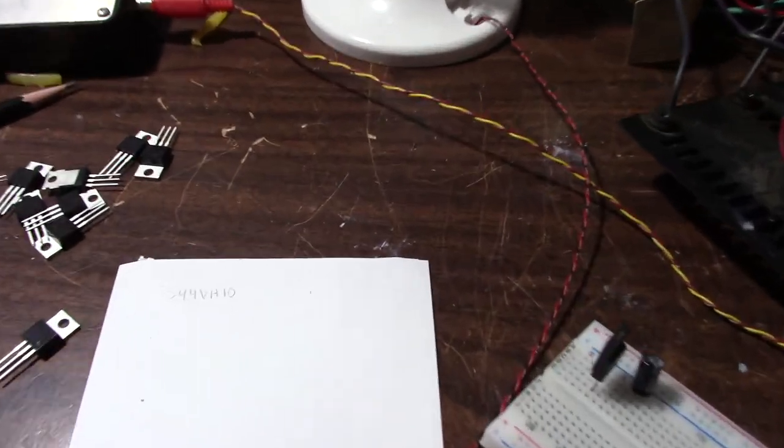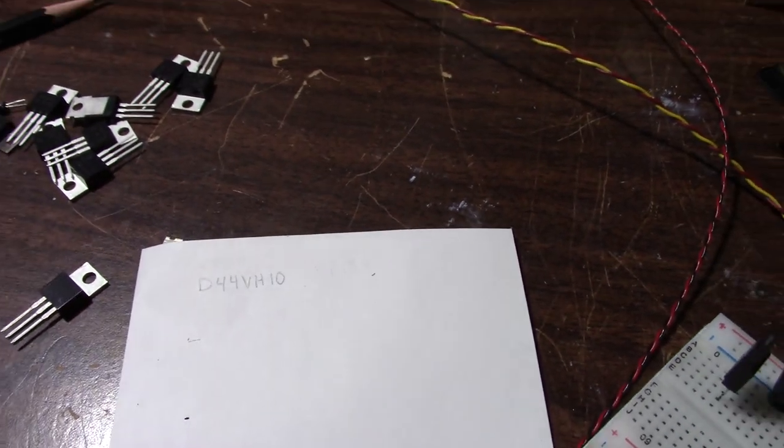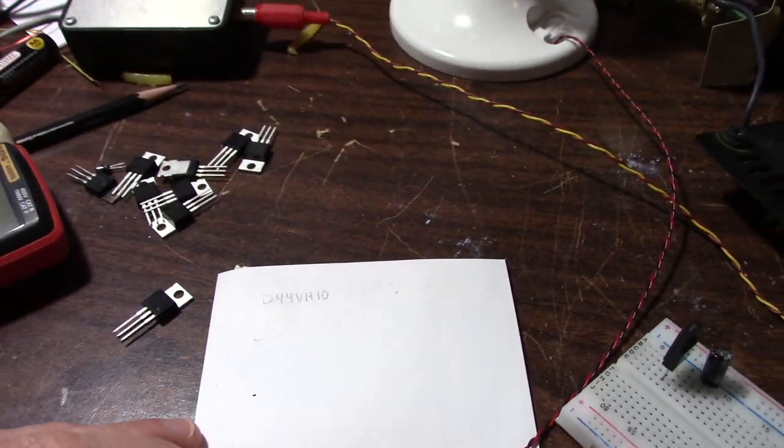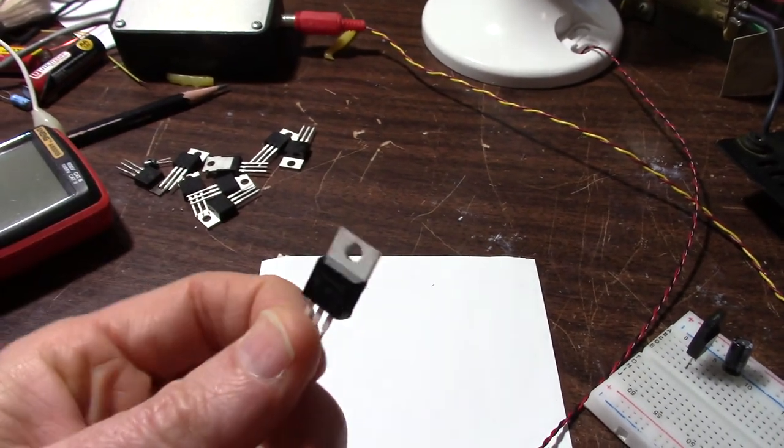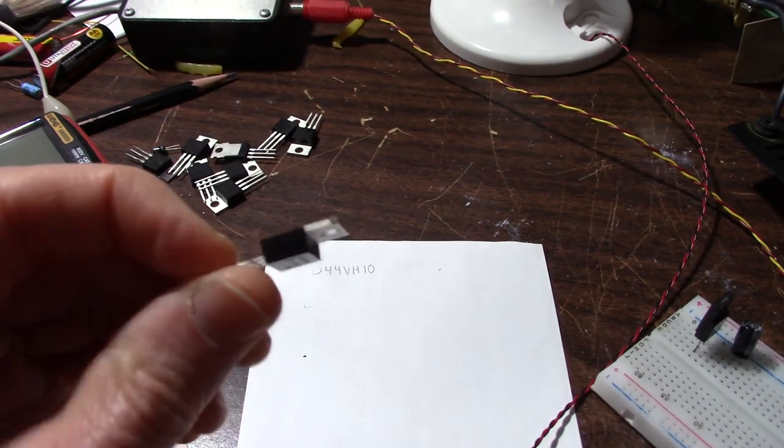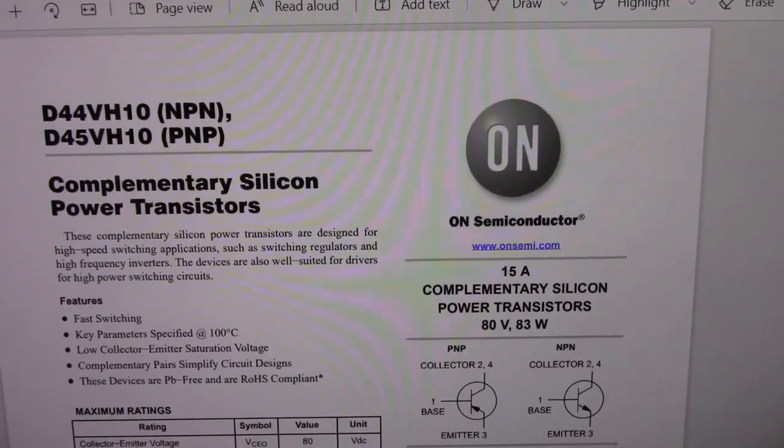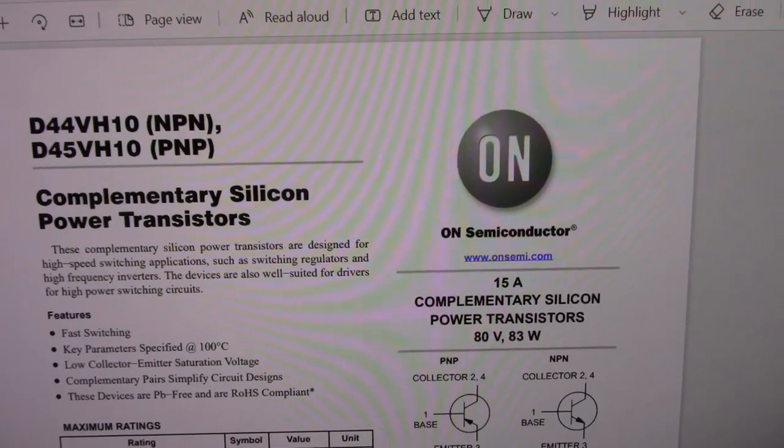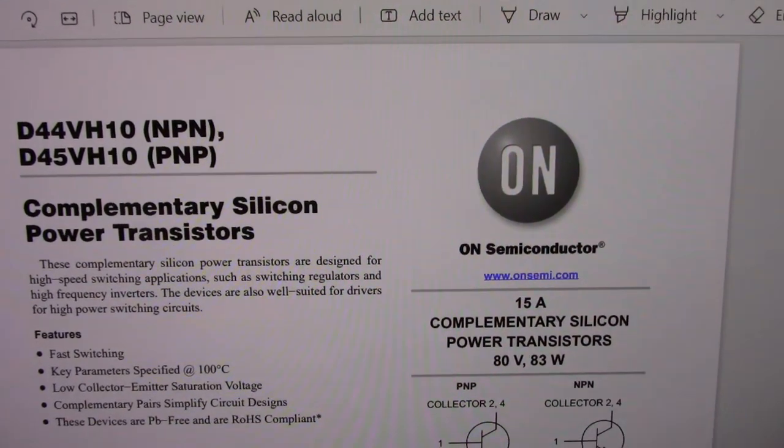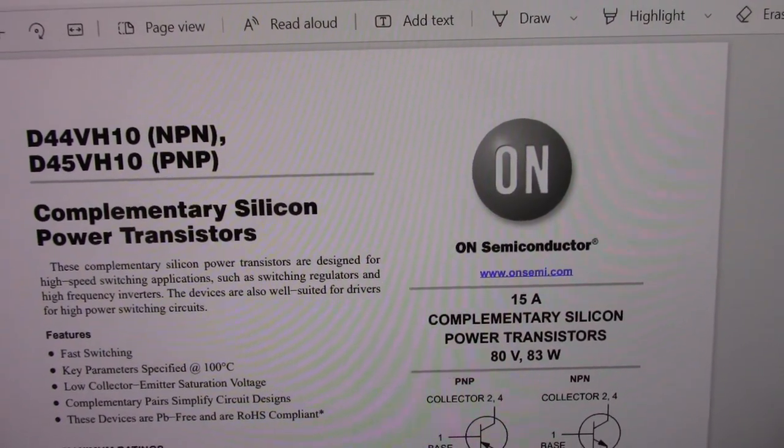And I found these D44VH10s and the complement D45VH10. They have pretty good specs. I want to do some tests. Let's take a look at the data sheet. These are meant for switching purposes, but that's okay. We could use them for other purposes.